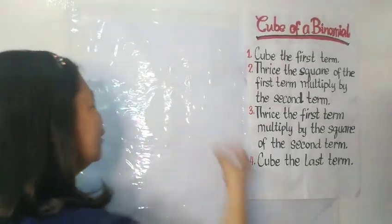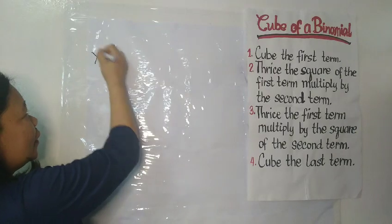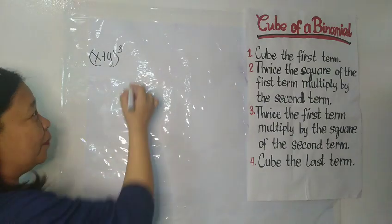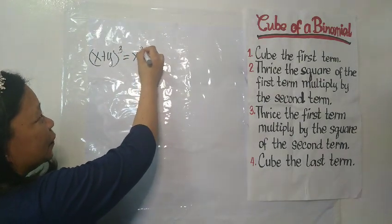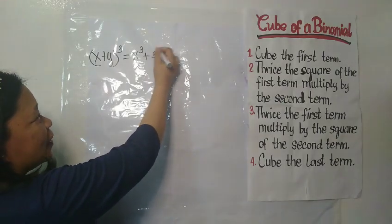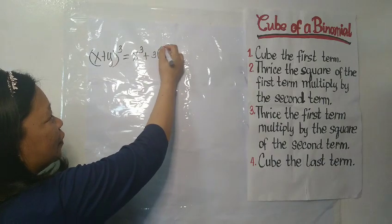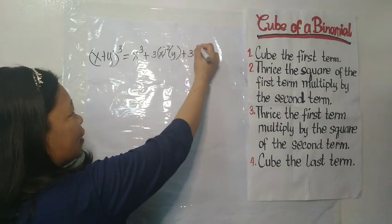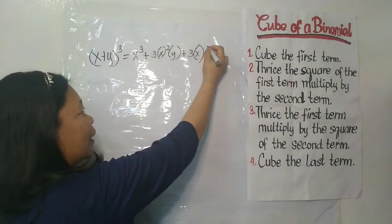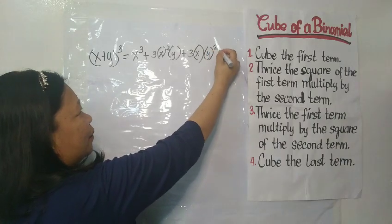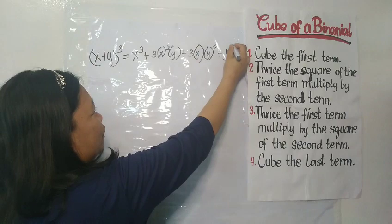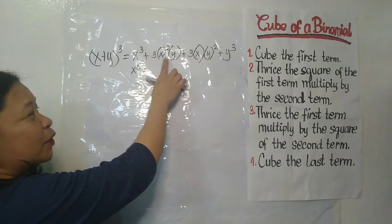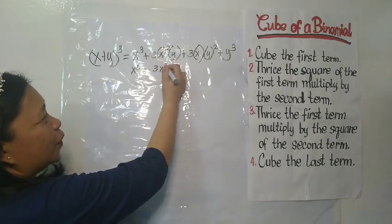Take a look at example number 1. We have (x + y) cubed. X is your first term and y is your second term. First, cube your first term, plus thrice the square of the first term multiplied by the second term, plus thrice the first term multiplied by the square of the second term, plus cube the last term. So we have x cubed plus 3 times x squared times y, giving us 3x²y.